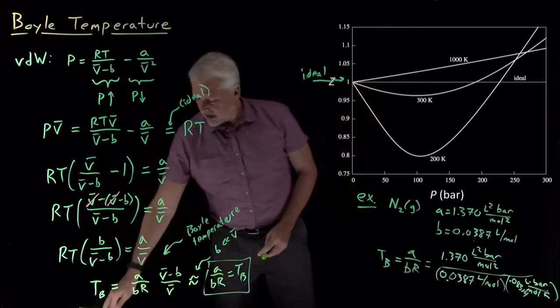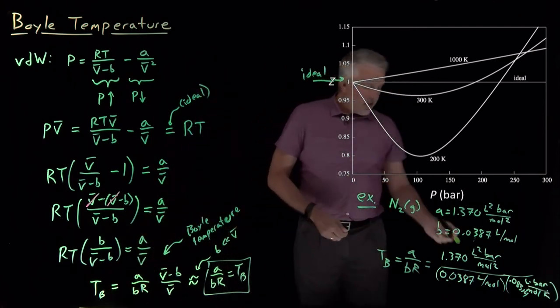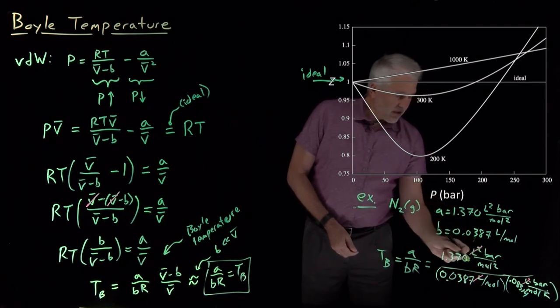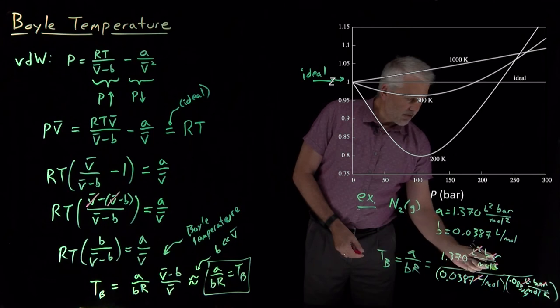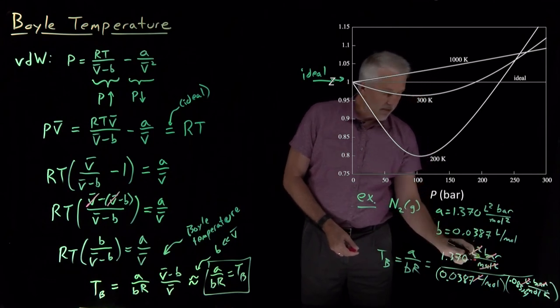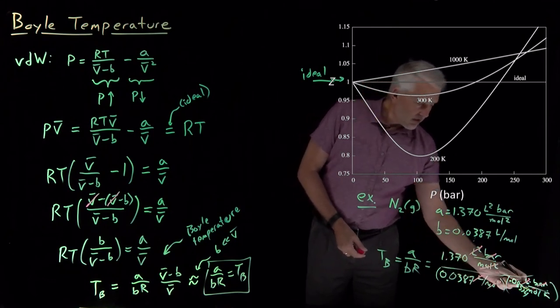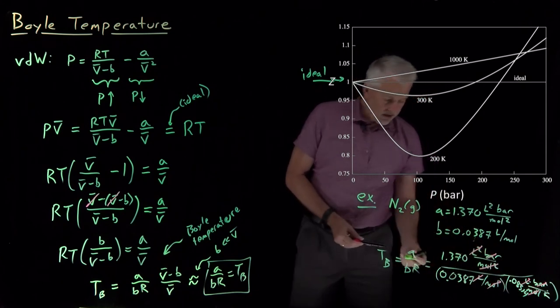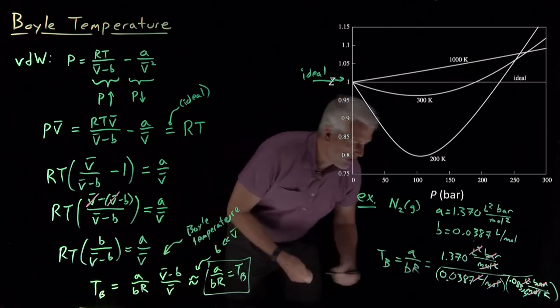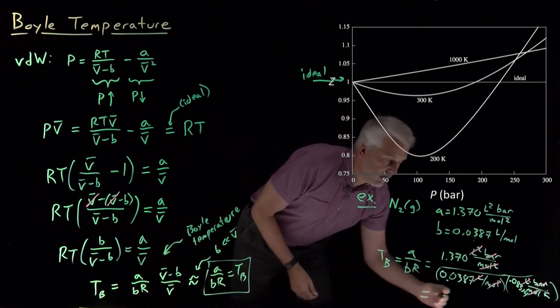And double-checking the units, I've got liters twice in the denominator, twice in the numerator, bars in the numerator, bars in the denominator, moles twice on the bottom of the numerator, moles twice on the bottom of the denominator, and all I'm left with is 1 over 1 over Kelvin. So the units are going to end up being Kelvin.